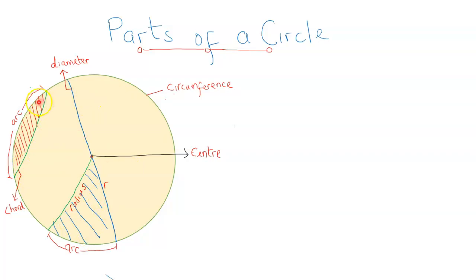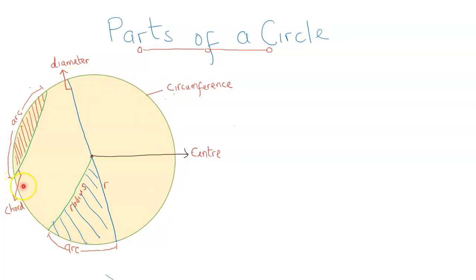A chord also divides the circle's boundary into a minor arc and a major arc. This smaller portion on the circumference is called the minor arc, while the larger one is called the major arc. The last thing we are going to consider is the tangent.